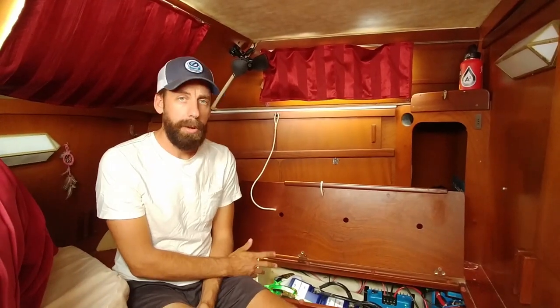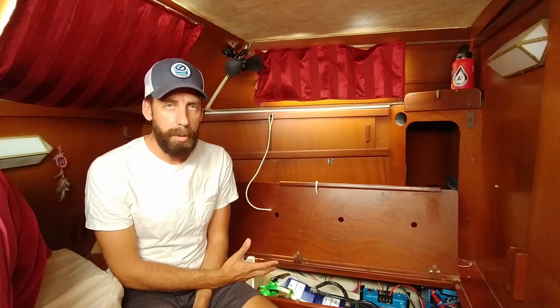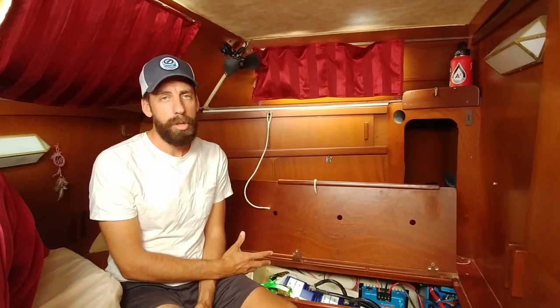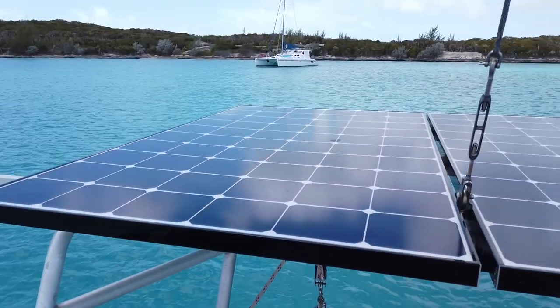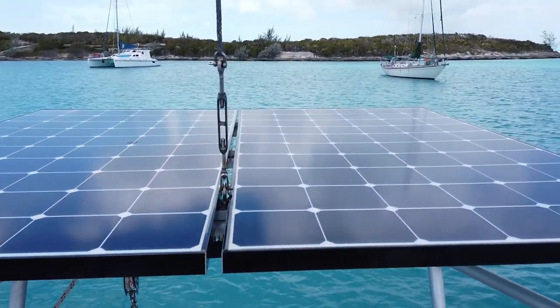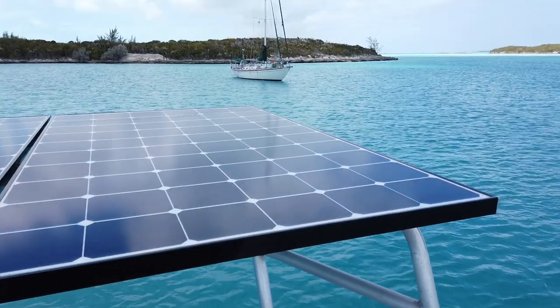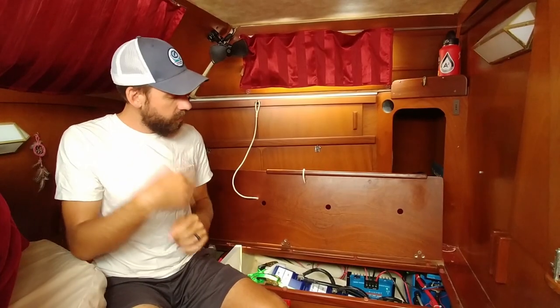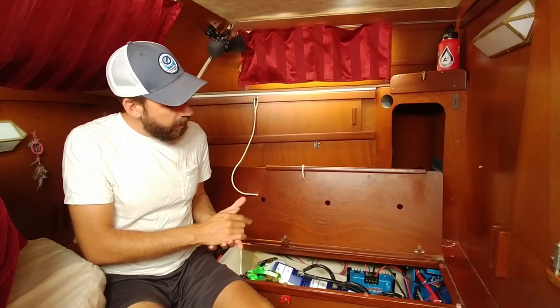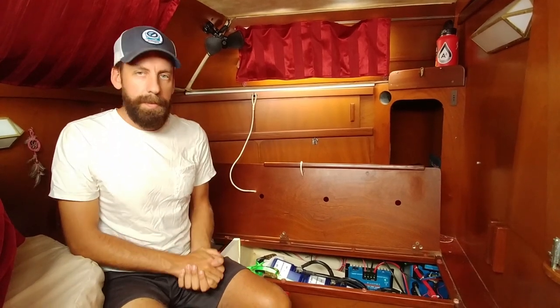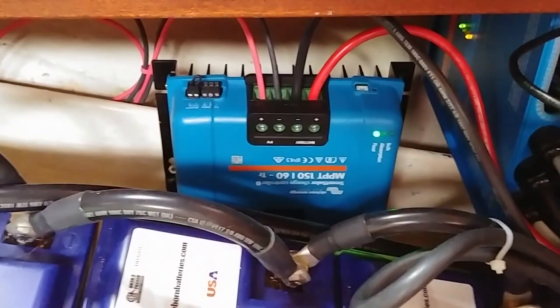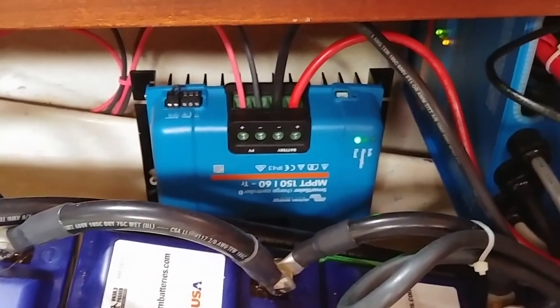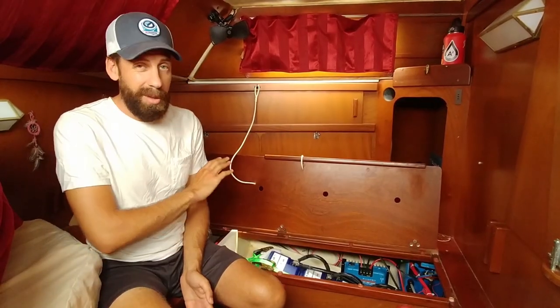The other component that we have mounted in here is our solar panel controller. So this is the charge controller from our big solar panels that we have mounted on the back of our boat. We have two LG 360-watt panels. And those come into a Victron MPPT 150-60 amp controller. So that's one of the nicer controllers on the market you can get.